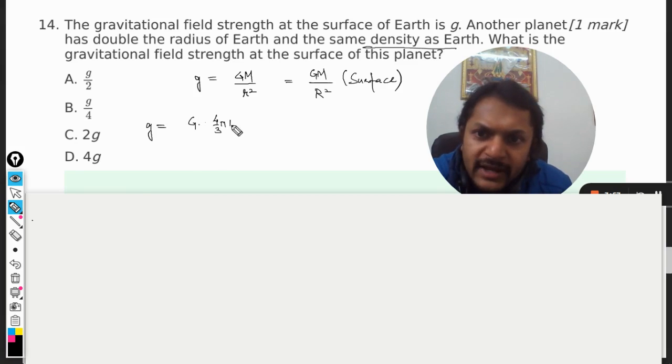And there we go, we have another formula in front of ourselves: 4 by 3 pi G r rho. Now this is gravity in the terms of radius and the density of the planet.